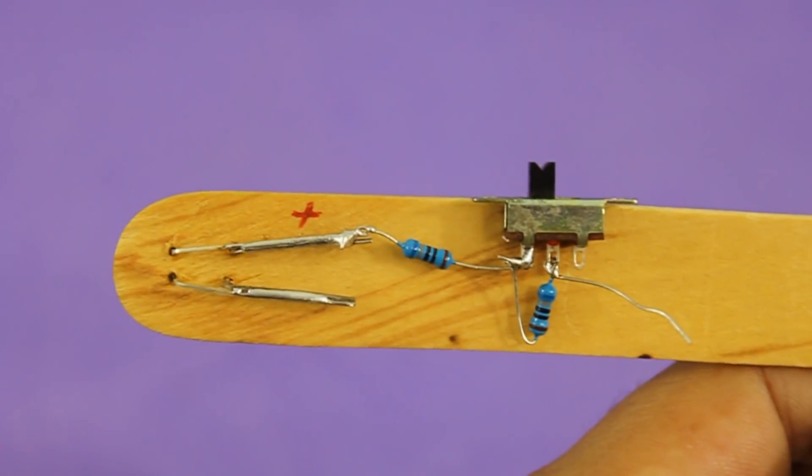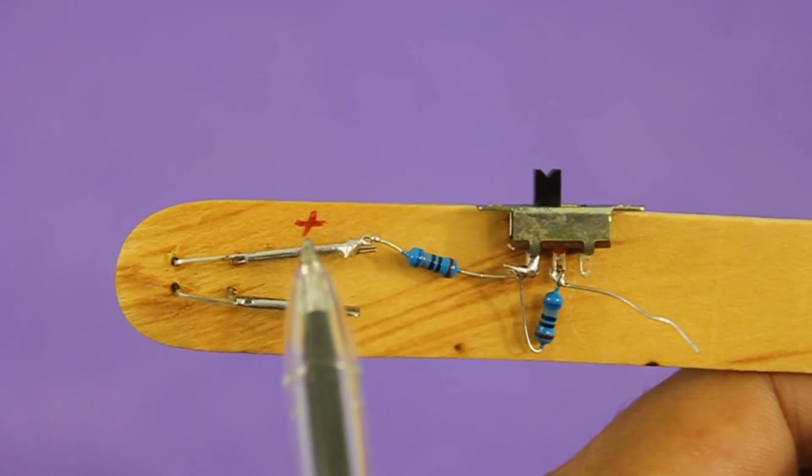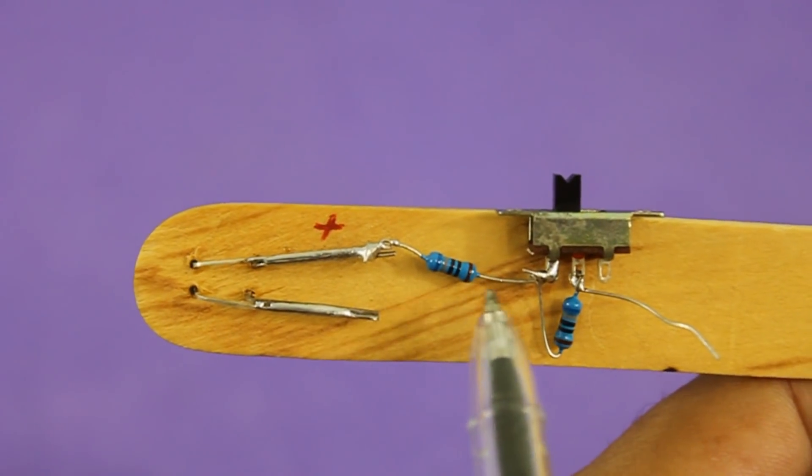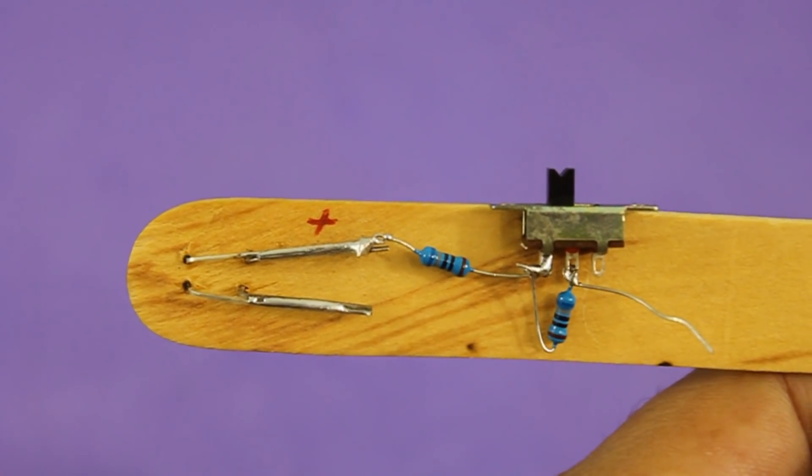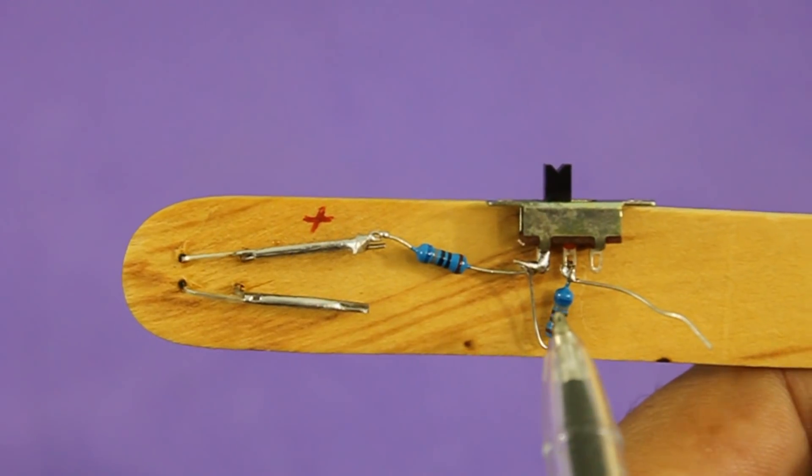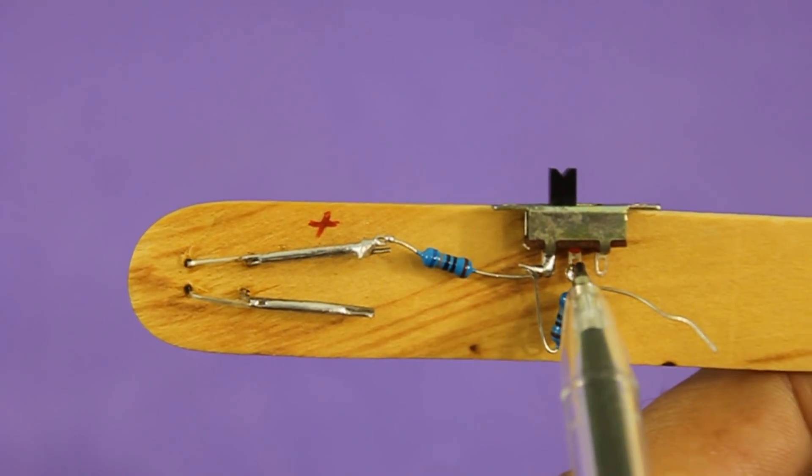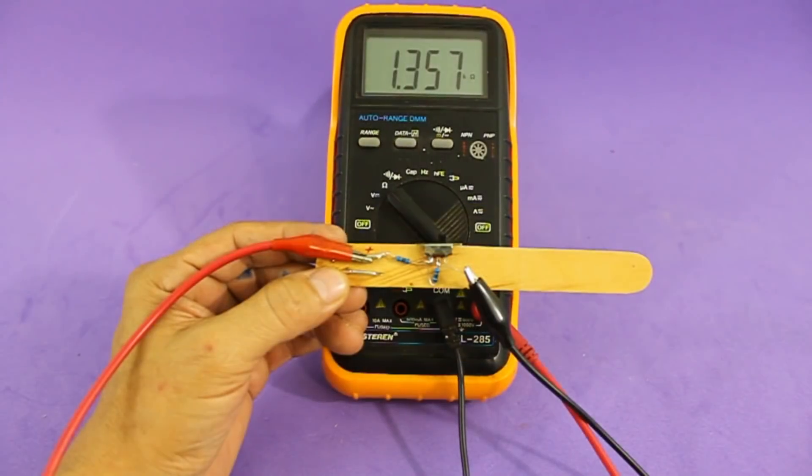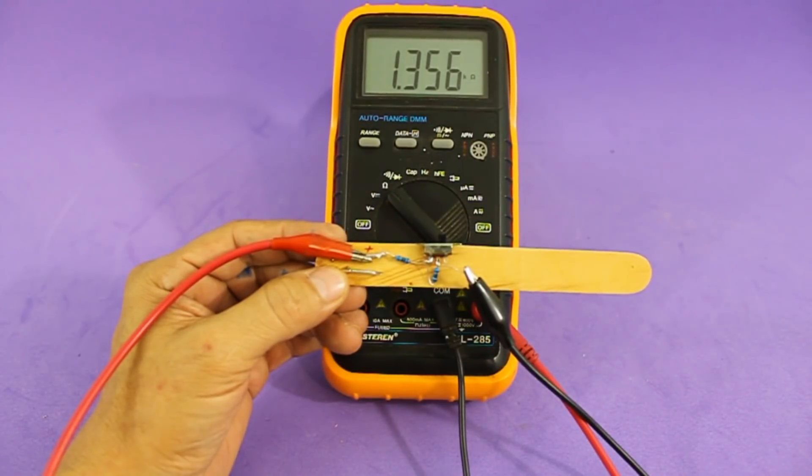Here you can see one resistor goes to the positive and the other side to one terminal of the switch and the other resistor from the same terminal to the middle terminal of the switch. In this way we can have two values of resistance.